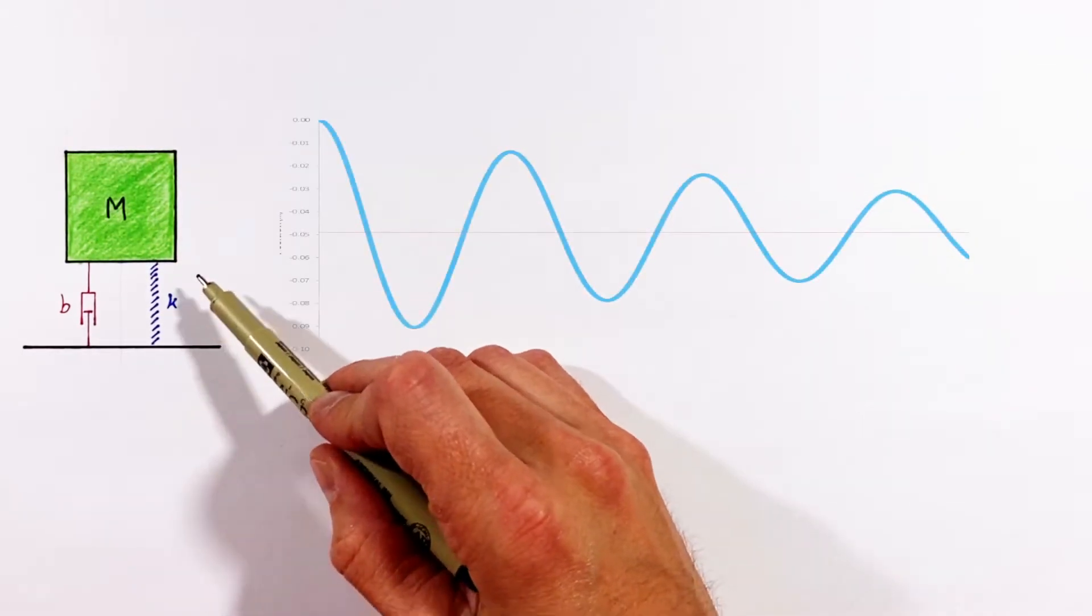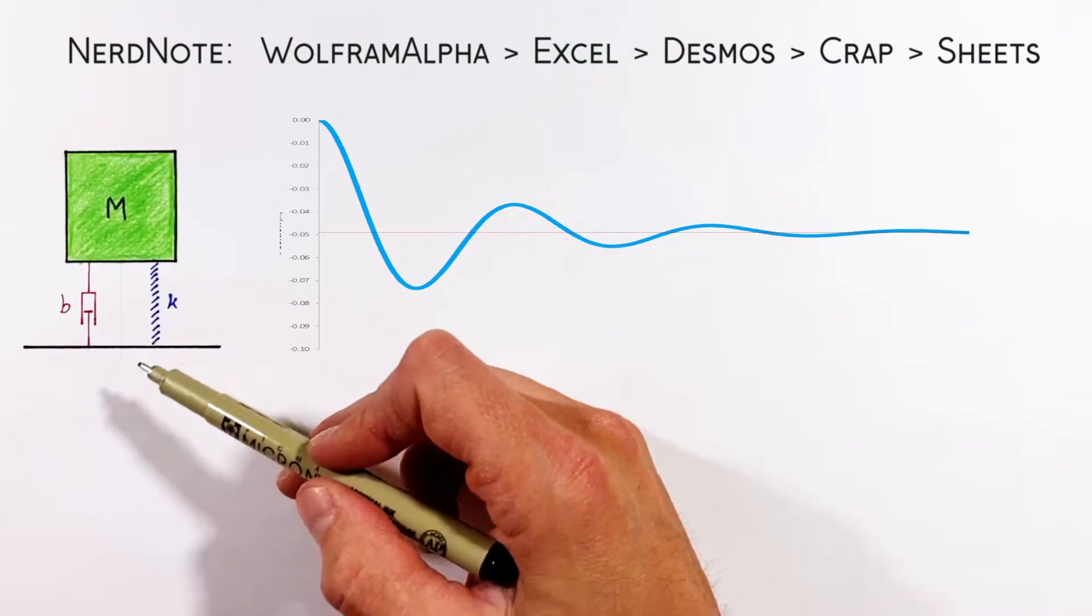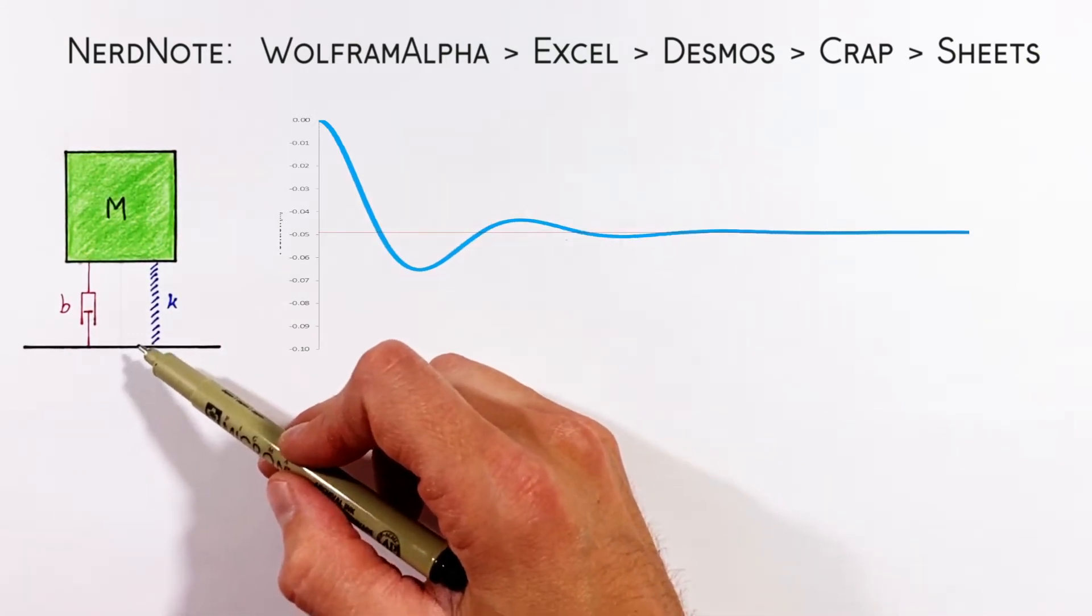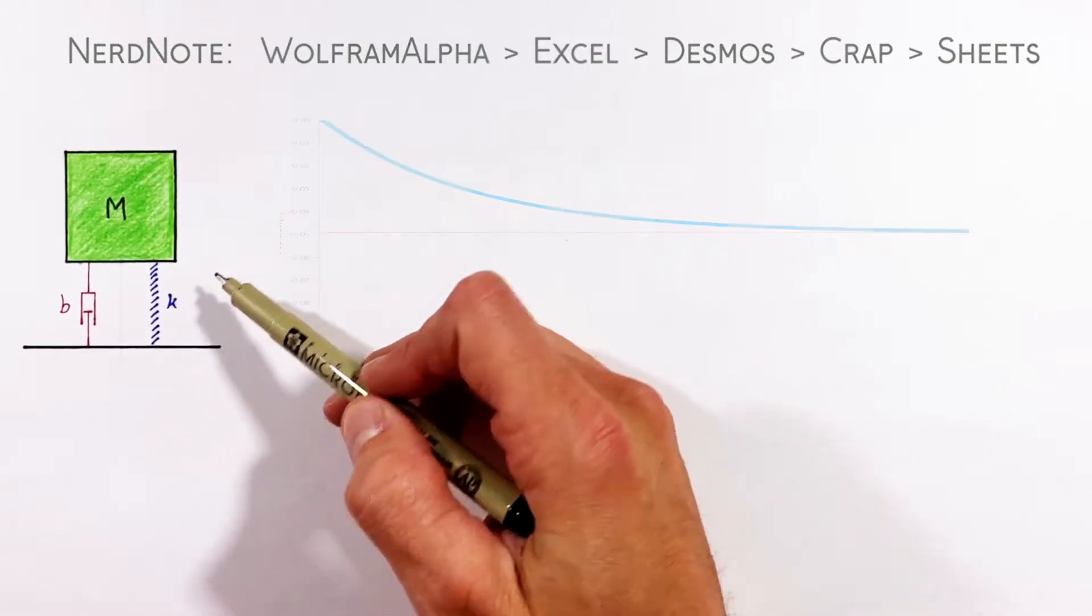Now mass-spring dampers show up everywhere. I mean, look at something like a mountain bike fork. See, a mountain bike fork has a viscous damper on one side, a spring on the other, and the oscillating mass is made up of the bike and the rider.